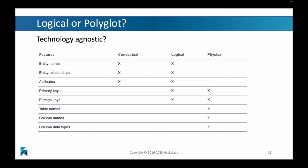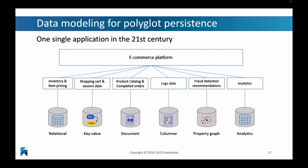Why? Because with the advent of all of these new types of data technologies, you really can't say that the technology-agnostic logical view of the world has to be normalized. In a new polyglot persistence data architecture, you will have lots of different parts to your application. Lots of different technologies will work together to compose one particular e-commerce platform, for example. You will have your inventory and item pricing in the relational database, the shopping cart and session data in a key-value store, your product catalog and completed orders in a document store, and so on.